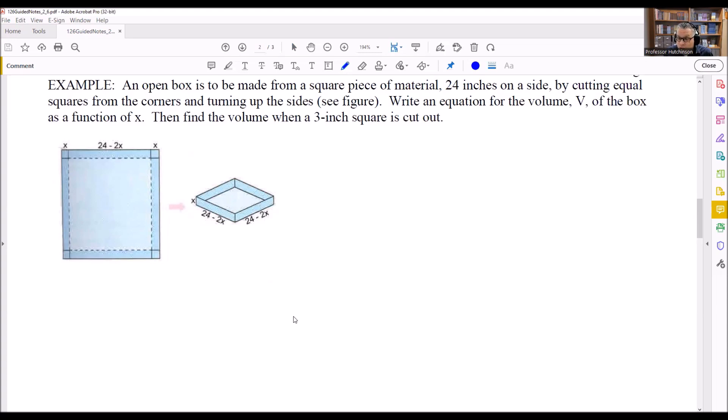So here is a figure that's given. Now what we're told here is this right here is 24 up and down. And then we're also told that this is 24 across like that. It says that we're cutting equal squares from the corners and then turning up the sides.